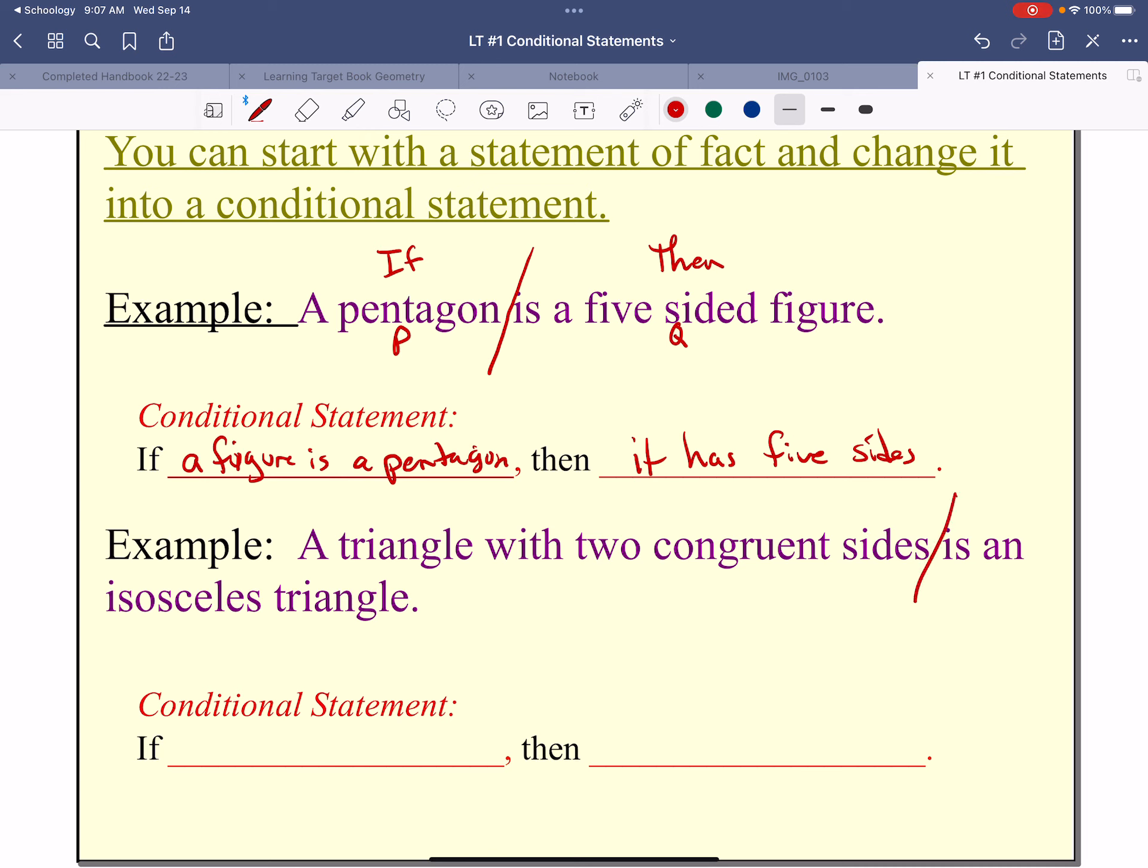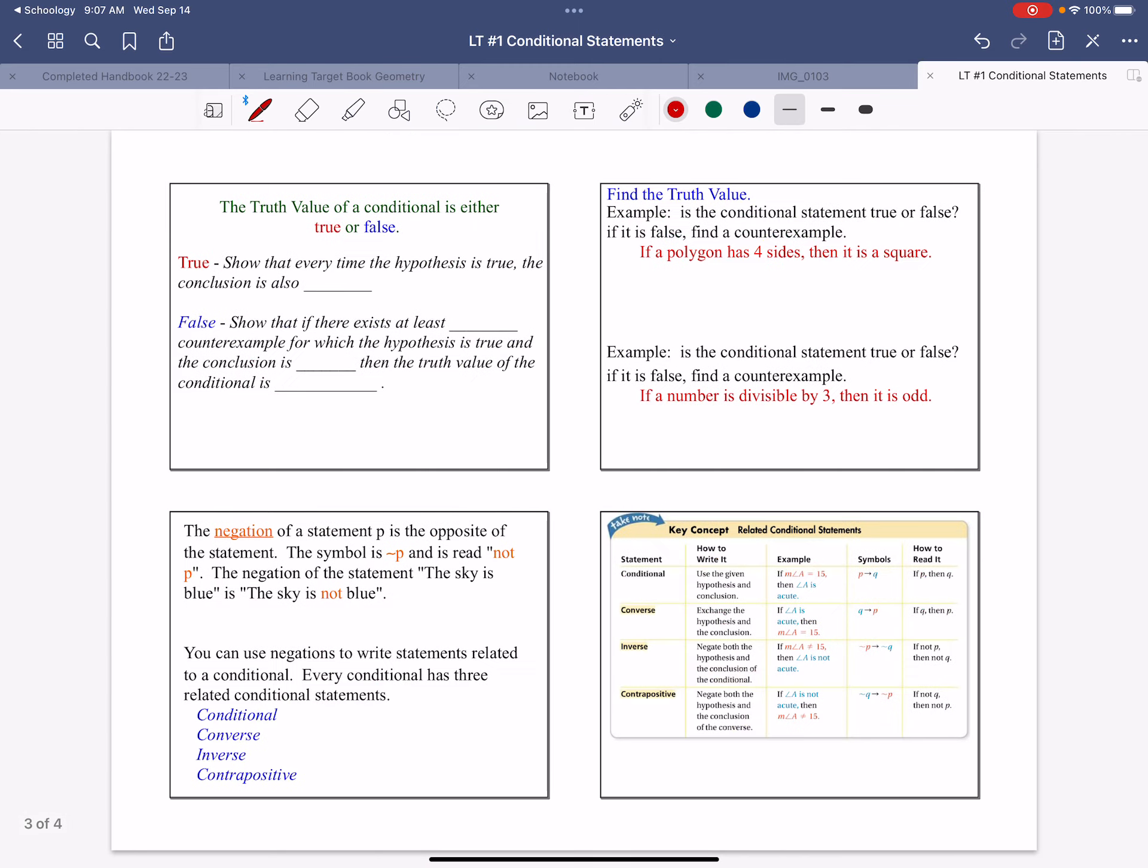All right, let's separate this. This will be the P part, this will be the Q part. So if a triangle has two congruent sides, using my math shorthand there, then it is isosceles. If a triangle has two congruent sides, then it is isosceles. There's your conditional.